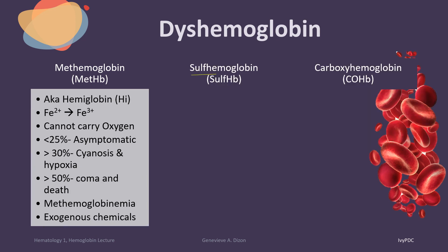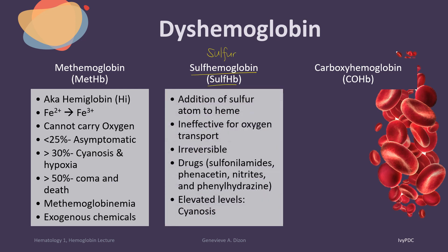The second type of dyshemoglobin is sulfhemoglobin, abbreviated as SulfHb. It results from exposure to sulfur chemicals from environmental or industrial settings. Sulfhemoglobin forms when sulfur atoms bind to the heme portion of hemoglobin, making oxygen transport ineffective. Unlike methemoglobin, sulfhemoglobin is irreversible — it cannot revert back to normal hemoglobin and persists for the entire life of the cell. Drugs causing this irreversible oxidation include sulfonamides, phenacetin, nitrites, and phenylhydrazine. Elevated sulfhemoglobin can cause cyanosis.